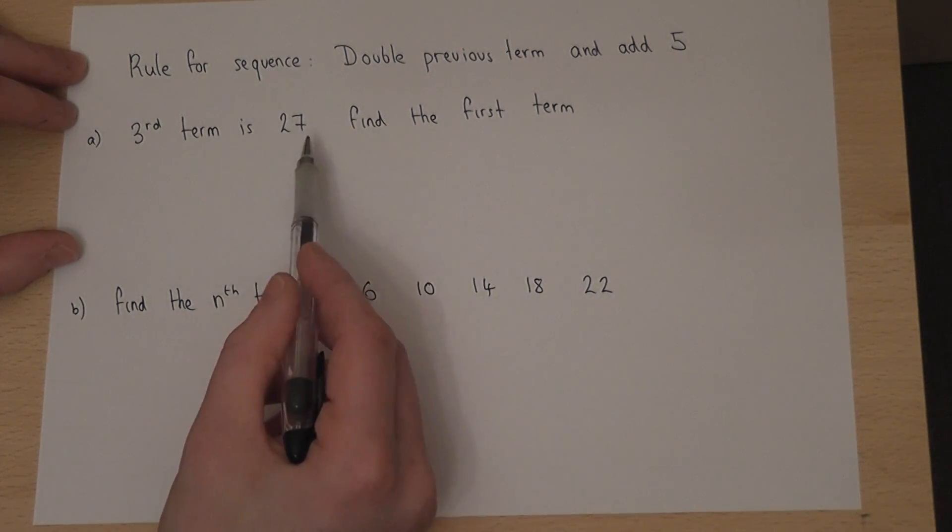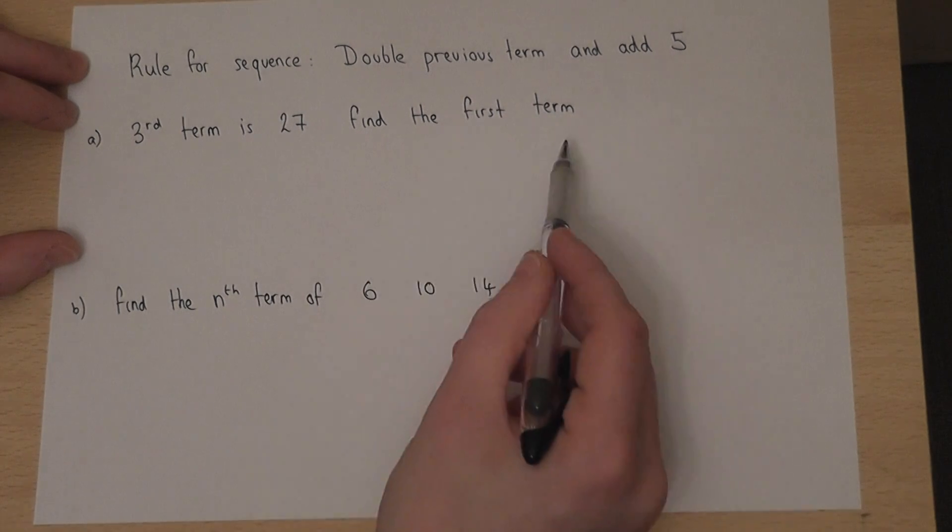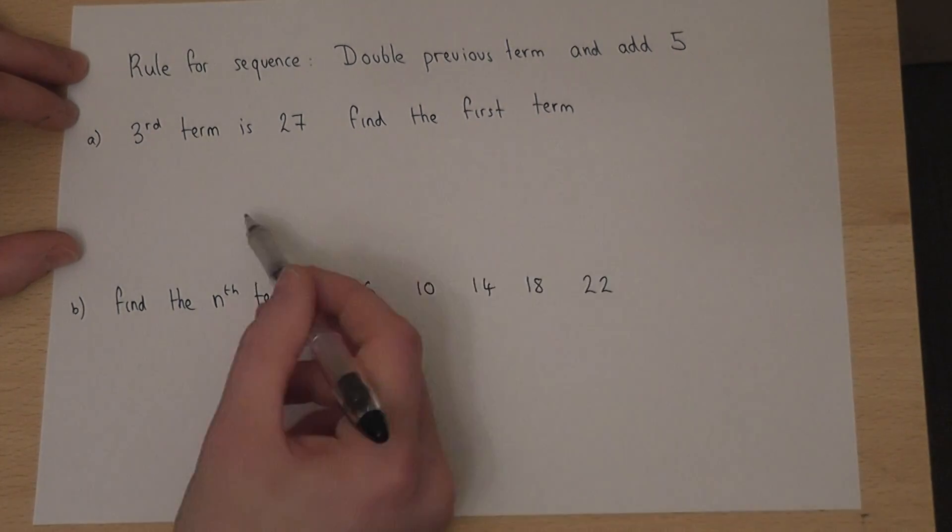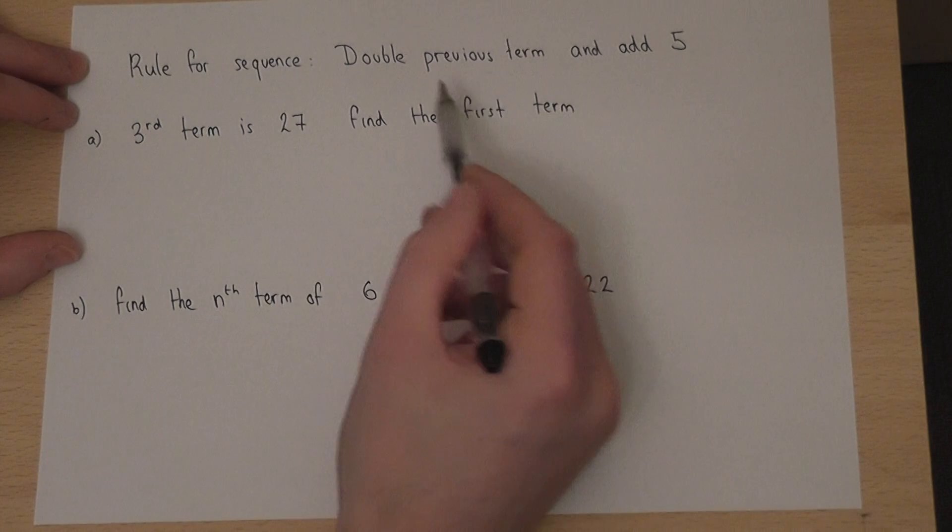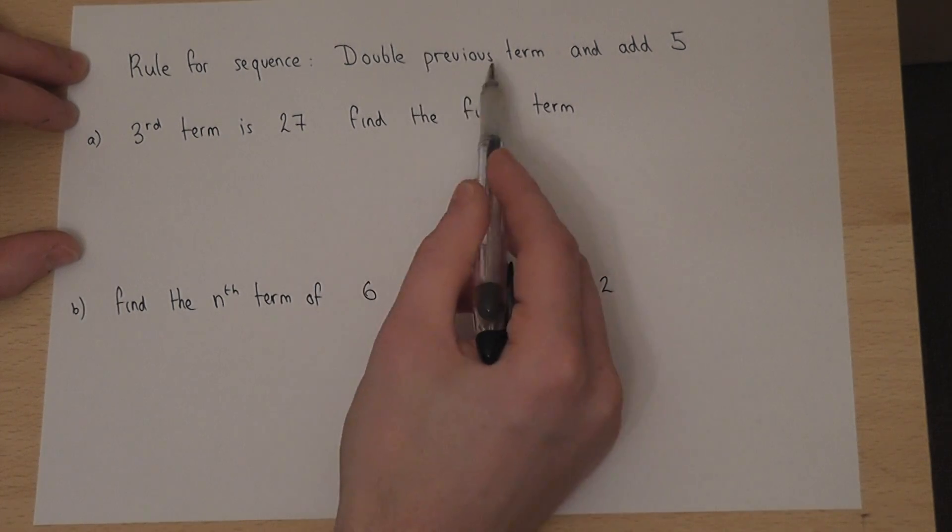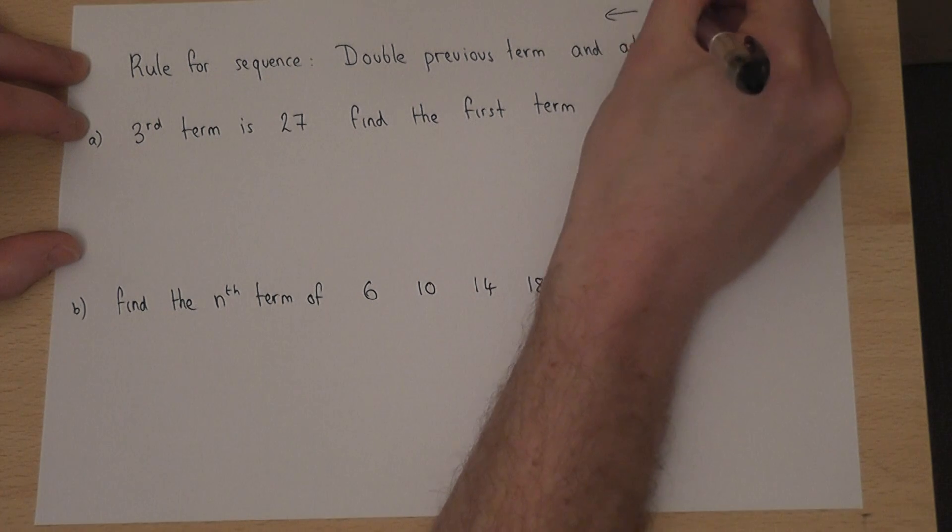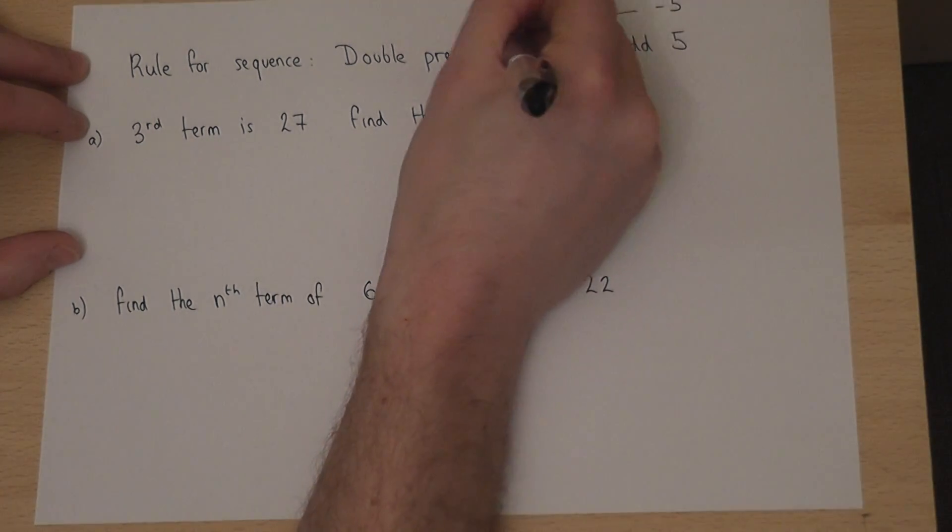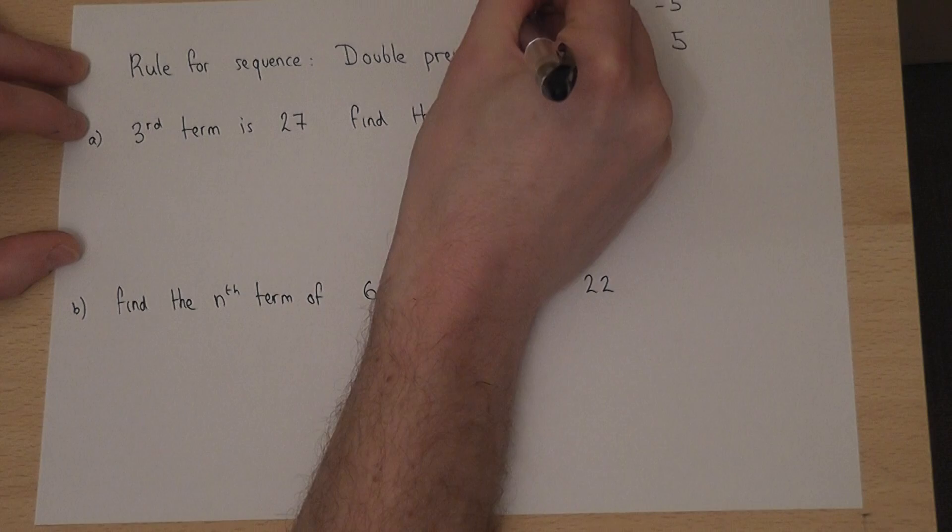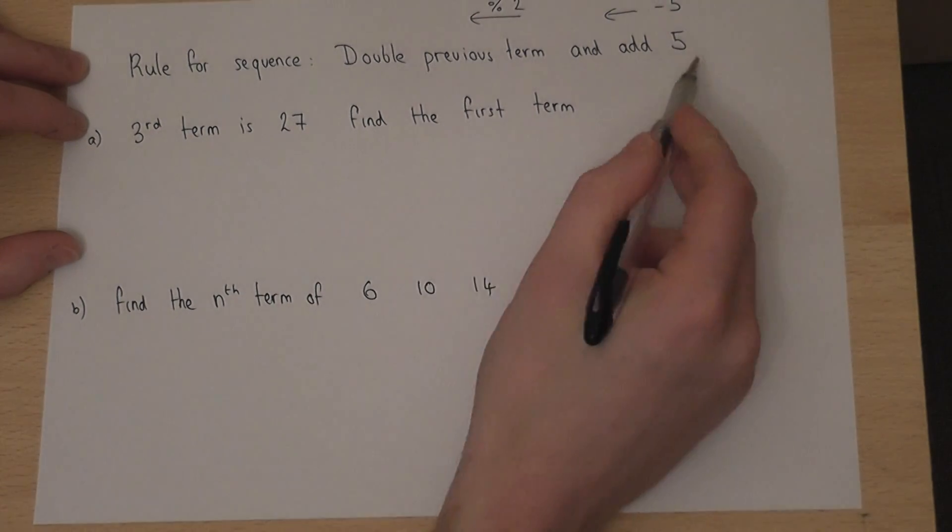But the question asks to go backwards to find the first term. Now, to go backwards, we reverse the instructions. So rather than double and then add 5, we go backwards. We will take away 5 and then divide by 2. That's to reverse operations.